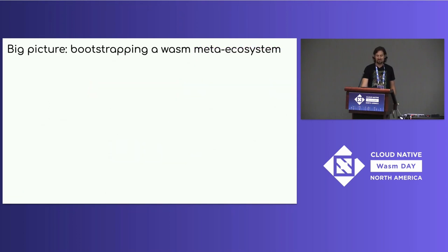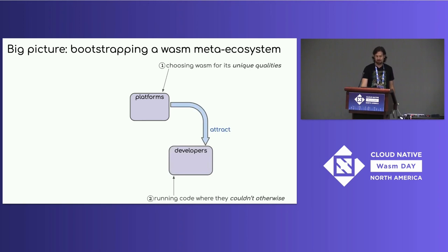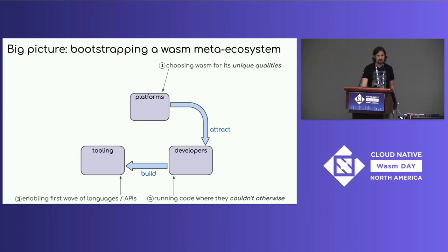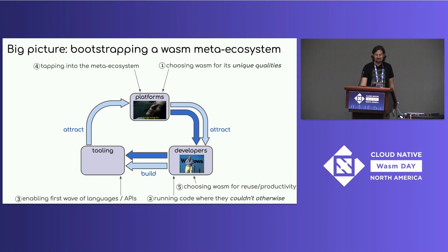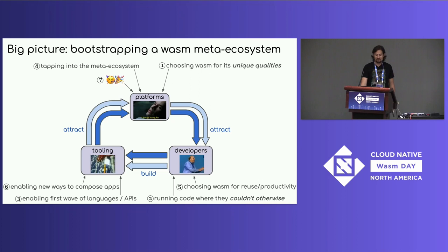Zooming way back out, the big picture is we're bootstrapping a Wasm meta ecosystem. We start with platforms choosing Wasm for its unique qualities, attracting developers who choose Wasm to run code where they couldn't otherwise. This causes us to build reusable tools enabling a first wave of languages and APIs. Because these tools aren't coupled to just one platform — they're general using the component model — we attract a new wave of platforms tapping into this meta ecosystem without having to build everything themselves. This attracts a bigger wave of developers choosing Wasm for ease of reuse and productivity, leading to a whole new wave of tooling that allows composing applications out of components and entirely new developer programming models.